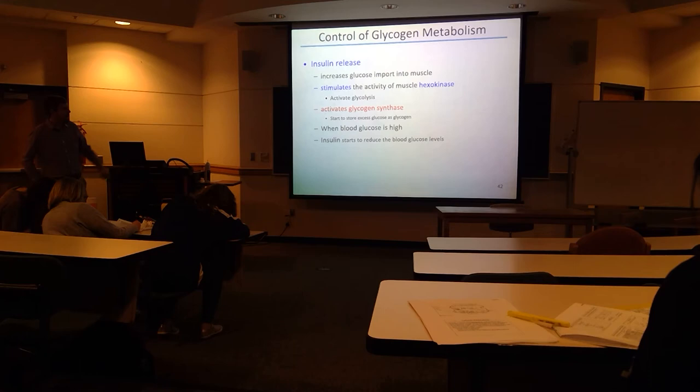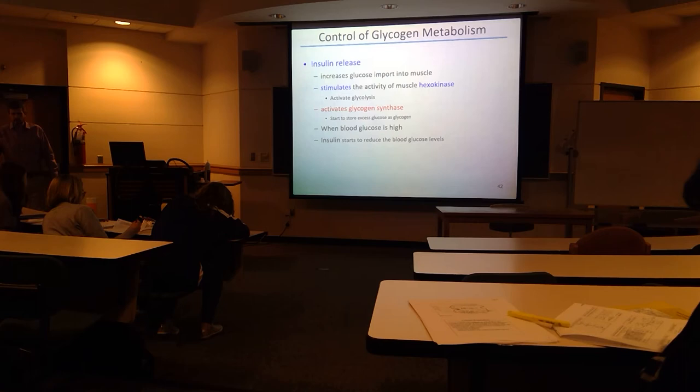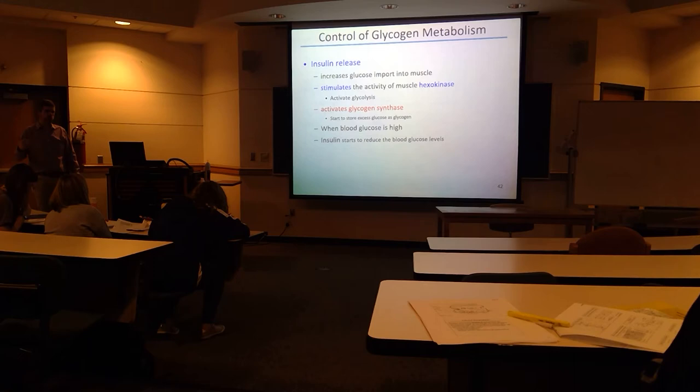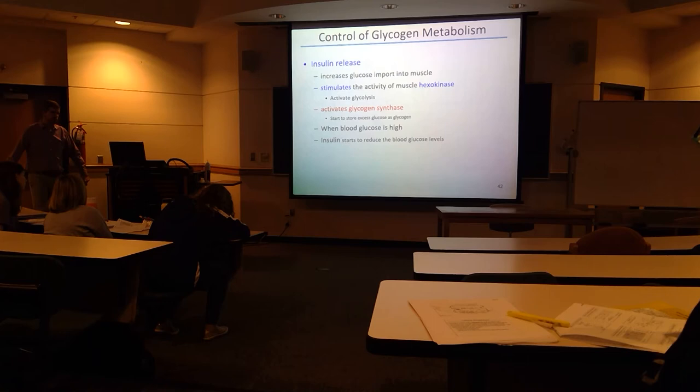When insulin levels eventually come down, that is a way the body reduces blood glucose levels. You don't want blood glucose too high for too long — that can cause all sorts of bad things. People with diabetes have blood glucose levels that are way too high for various reasons: inability to secrete insulin, inability to respond to insulin, and others.